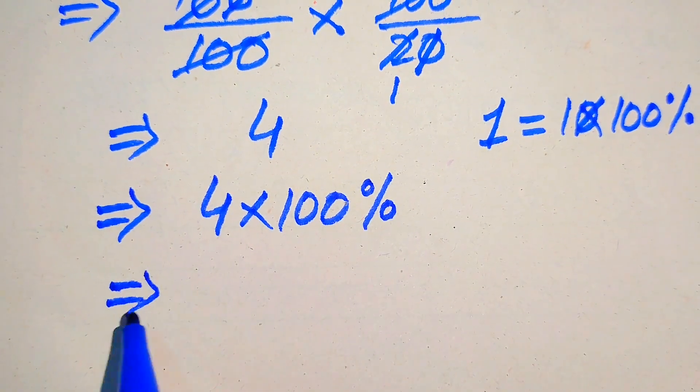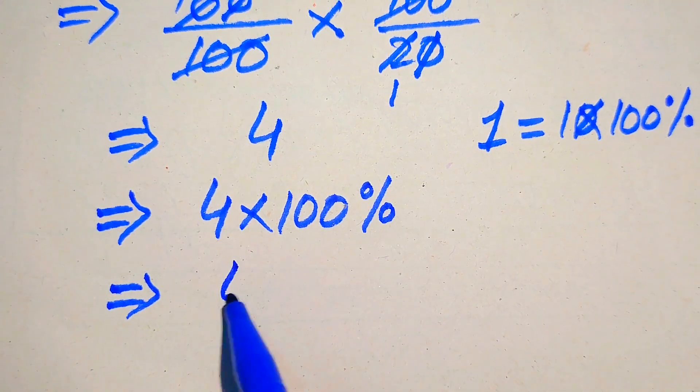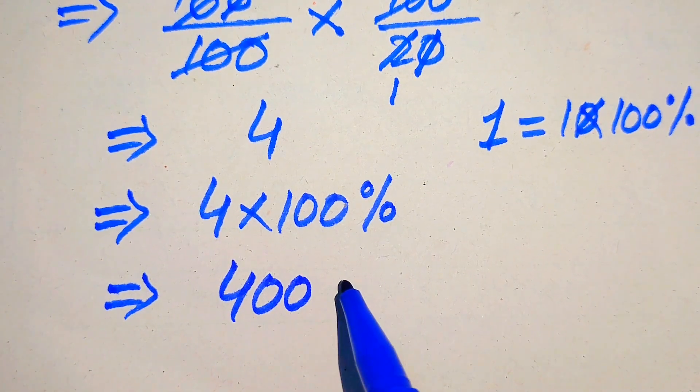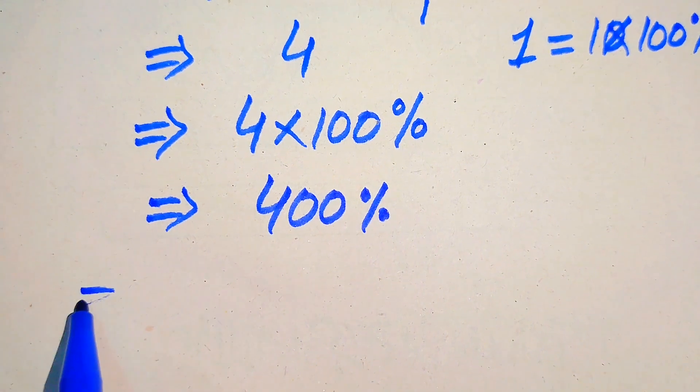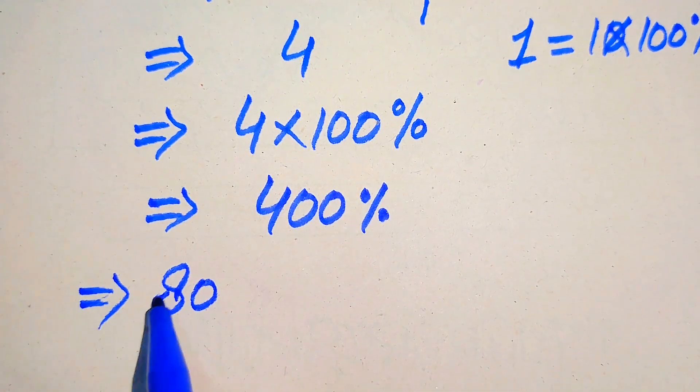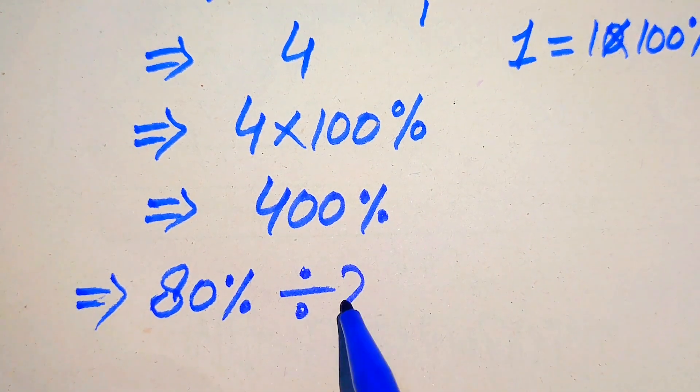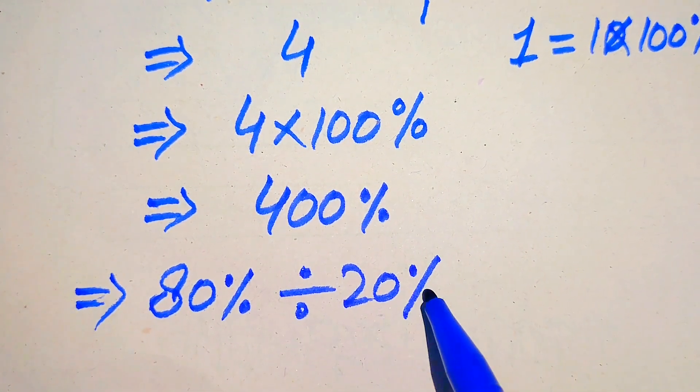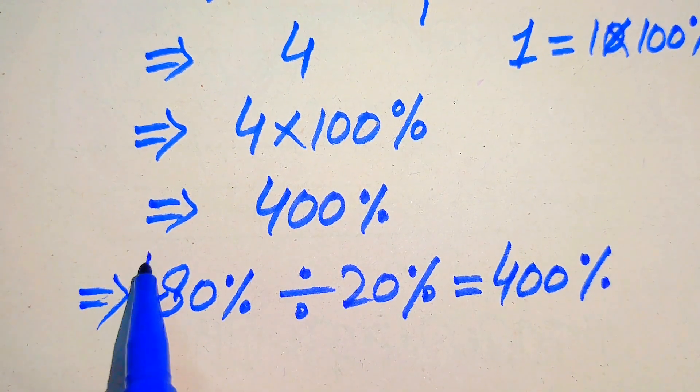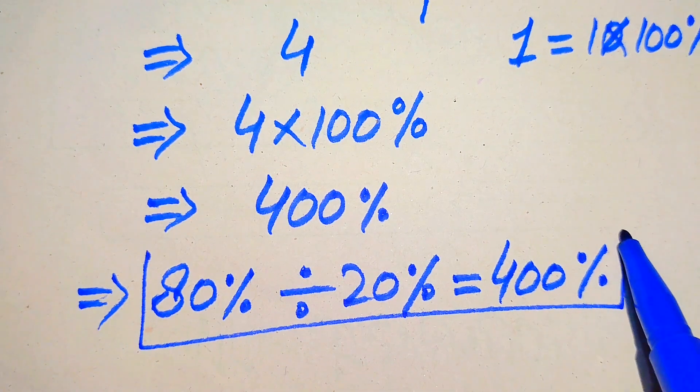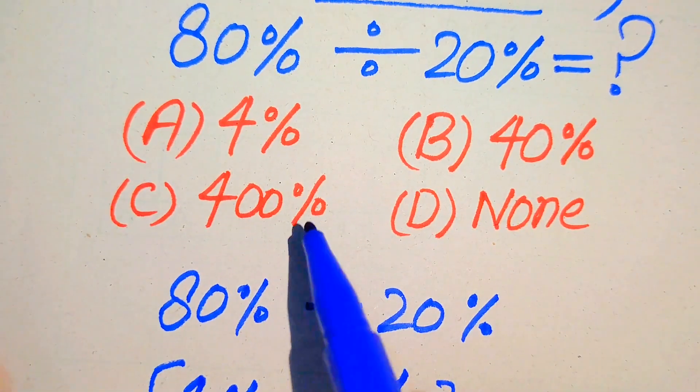This is 4 times 100. When we multiply 4 times 100, you get 400 percent. This means our final conclusion about the given question statement is that 80 percent divided by 20 percent equals 400 percent. This is our final conclusion about this problem and our final answer. Now we choose: C is the correct option.